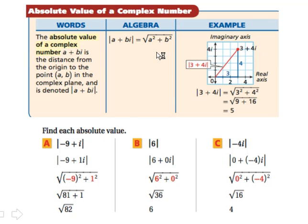Another thing that we're going to do is find the absolute value of a complex number. And basically you want to use this formula here. When you have the absolute value of a plus bi, you take the a and you square that. You take the b and you square that. And you take the sum of that and the square root of that is your absolute value.